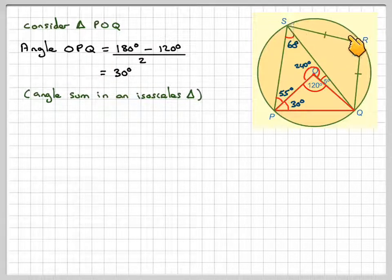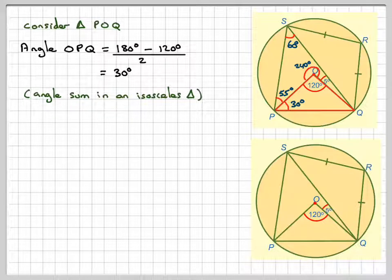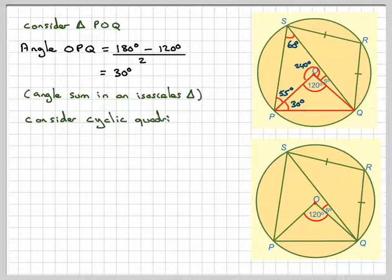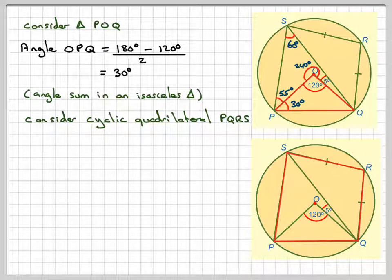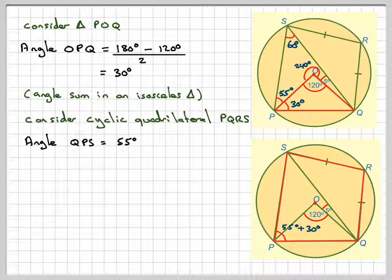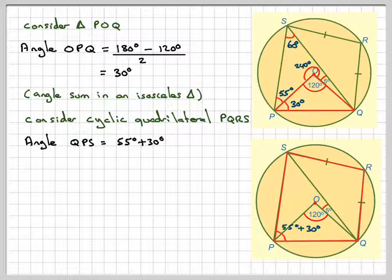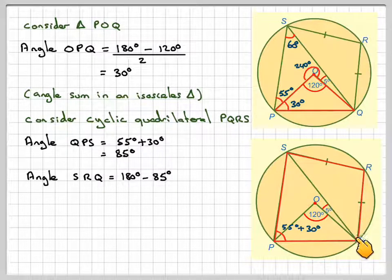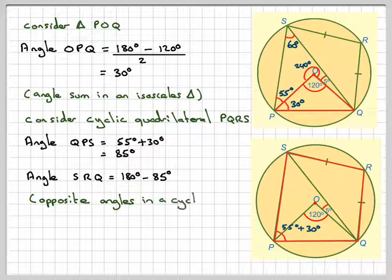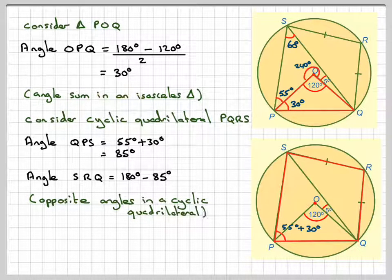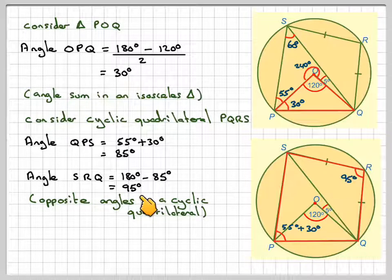And if you remember, I said that this was a cyclic quadrilateral. So just consider the cyclic quadrilateral PQRS. This is 55 plus 30, so angle QPS is going to be 55 plus 30, which is 85, and therefore angle SRQ is going to be 180 minus 85, opposite angles of a cyclic quadrilateral, which is equal to 95.